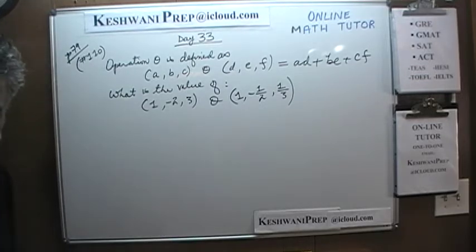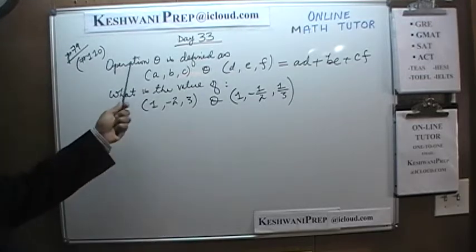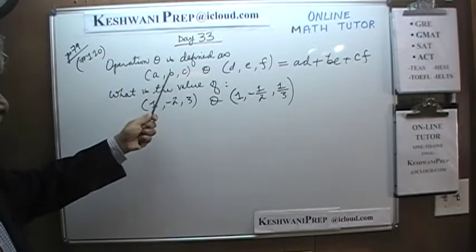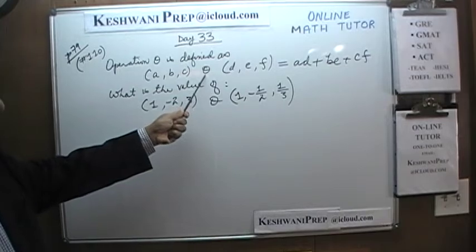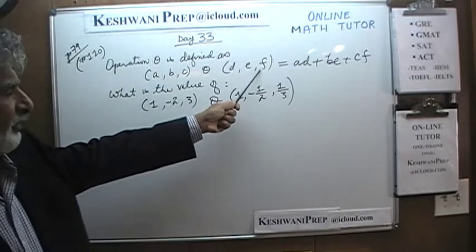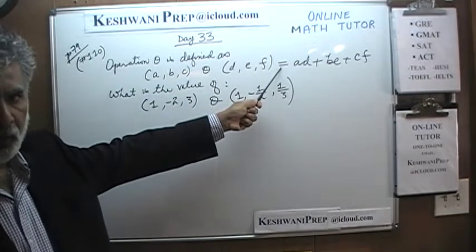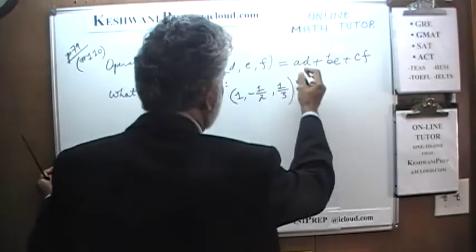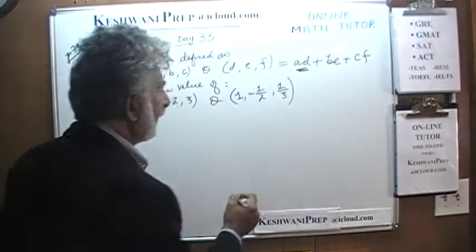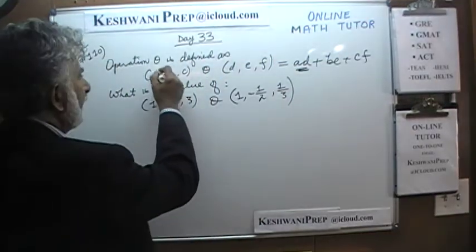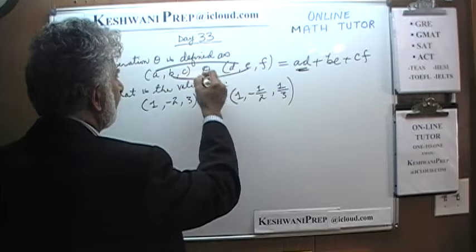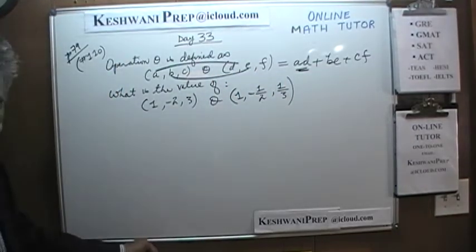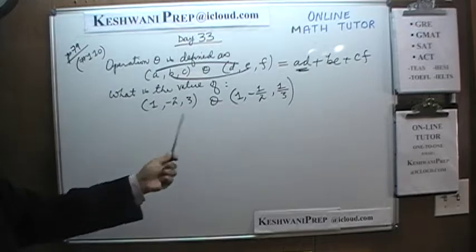The very first problem is straightforward. We have some operation theta defined as (A, B, C) theta (D, E, F), and we are told what the operation requires. What it requires is a simple product of corresponding quantities: A times D, B times E, and C times F. The question is: what's the value of this quantity?